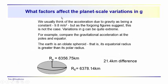We want to talk about factors that affect planet-scale variations in g — really just talking about what is the acceleration due to gravity at any point on the surface of the Earth. To answer that question, we have to think about what's going on with the Earth. The acceleration due to gravity is not constant on the Earth, and there are several features associated with the Earth that cause its gravitational acceleration to change from one point to another.